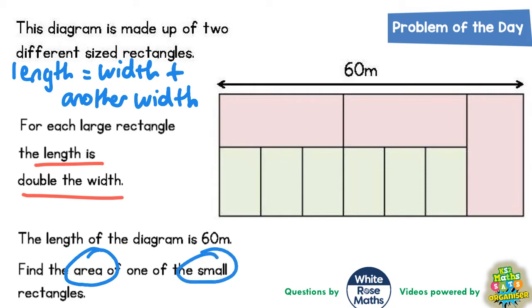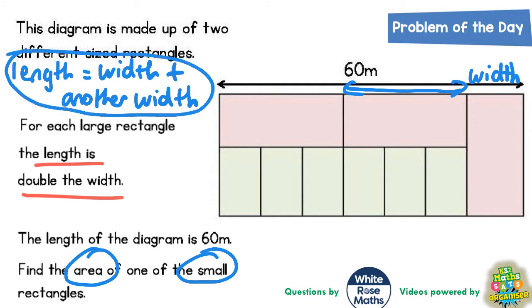Well the easy thing to do here is go to the top of the diagram and write on the word width on the width of the actual pink rectangle. But this distance here is the length of the pink rectangle. And what we've just said is that a length is a width plus another width. So we could write width plus another width along the top of that length. And we've got another length here. So again that length is also a width plus another width.